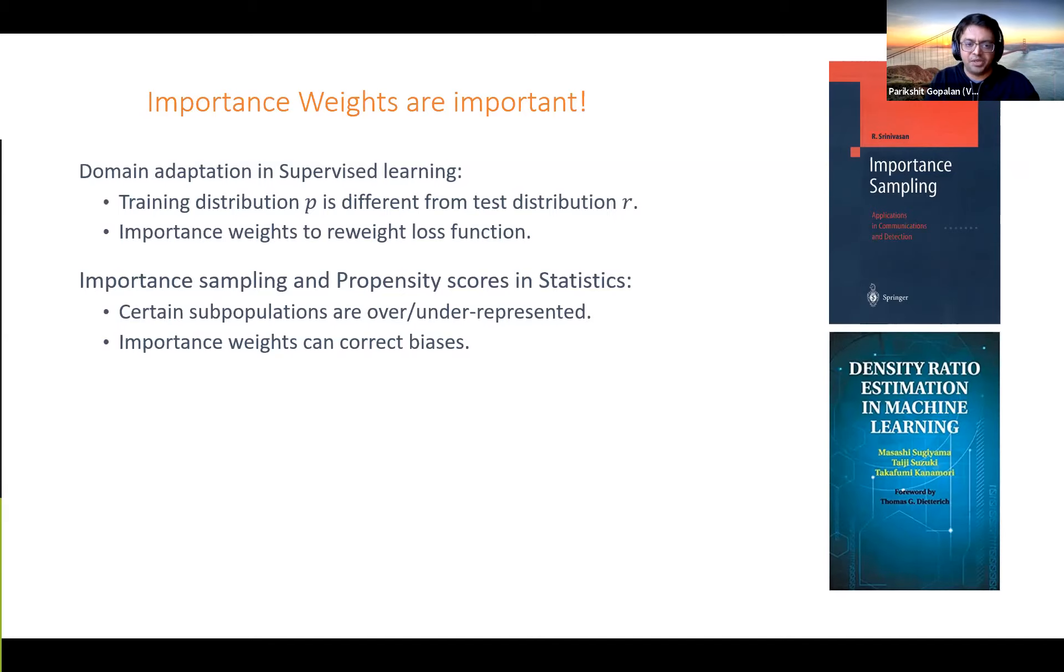Importance sampling and propensity scores in statistics - again, a vast body of literature. Statisticians have always known, and the rest of us are learning from this election, that in any survey, certain populations are either under or overrepresented. And if you have good importance weights, it lets you correct for these biases in your sampling data.